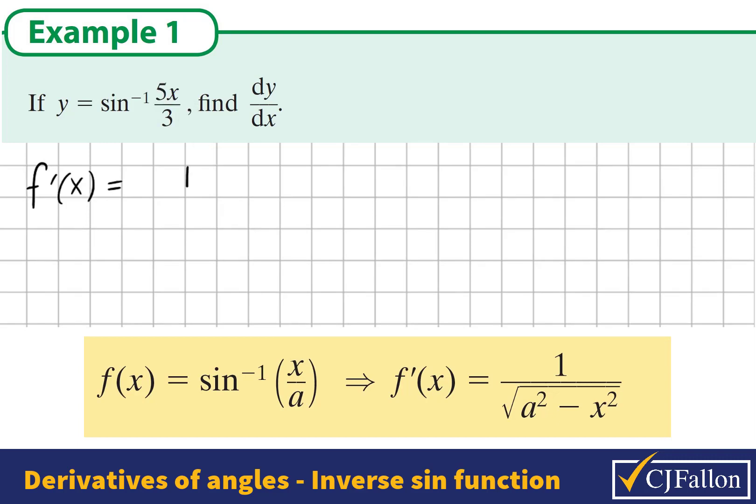Using the formula, it's 1 over the square root of a², so that's going to be 3², minus x², and we're treating that as (5x)².